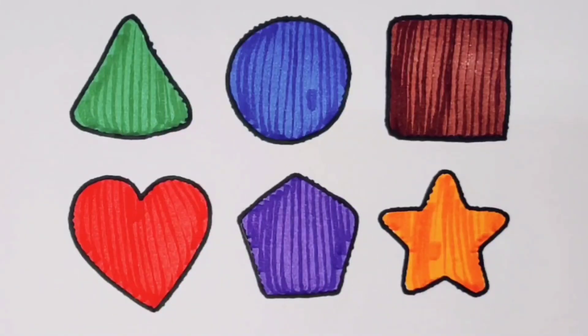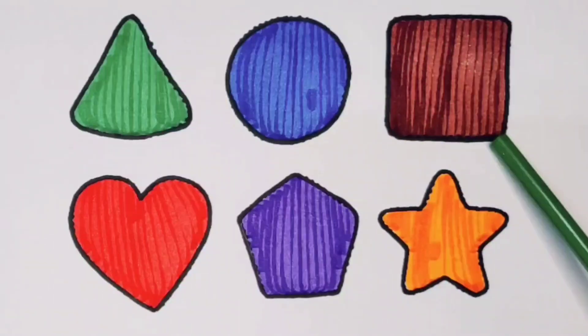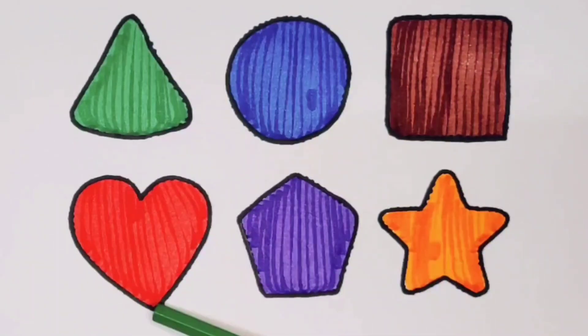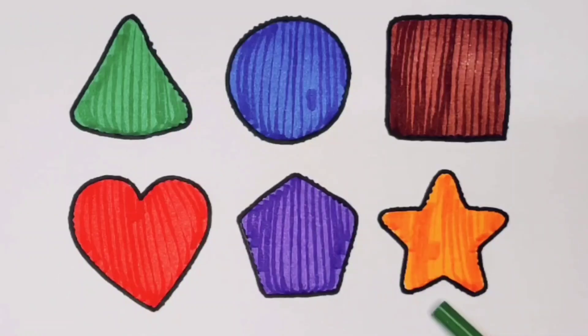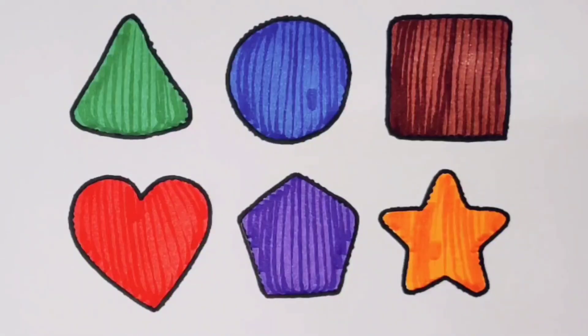What we learn? We learn green color triangle, blue color circle, chocolate color square, red color heart, purple color pentagon, orange color star. Thank you for watching my video. If you like it, please subscribe. Bye bye.